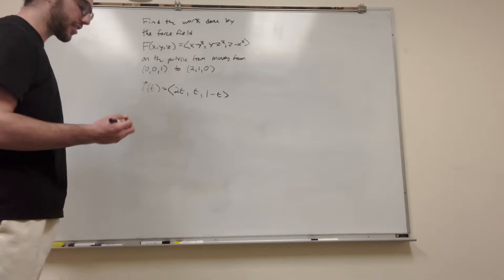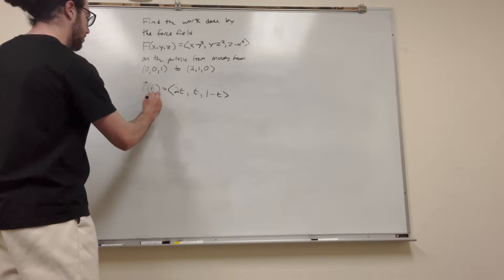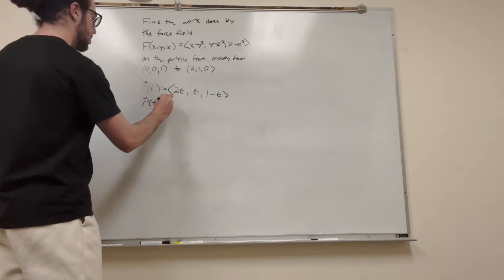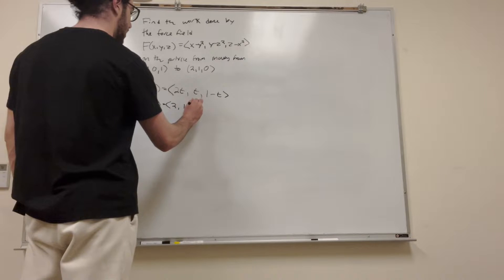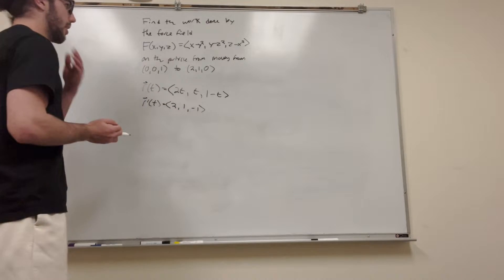Now we need to find the derivative of this for our equation. So R prime of T equal to 2, 1, negative 1. Pretty easy. All right, now integral.